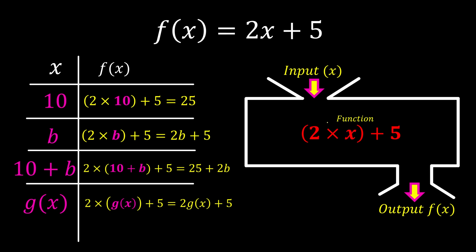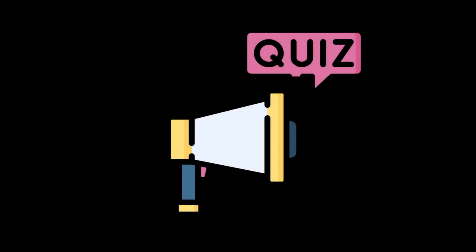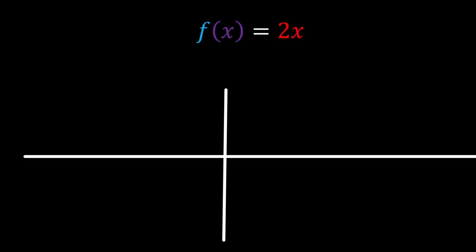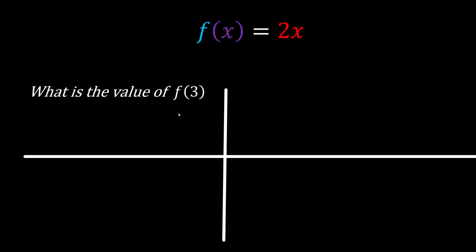Literally, whatever you give to the machine, the machine will try to accept and process it for you. So let us test you with a quiz. This time we have a function f(x) = 2x, and I ask: what is the value of f when we input 3? We already know you chose 3, so it's no longer unknown.